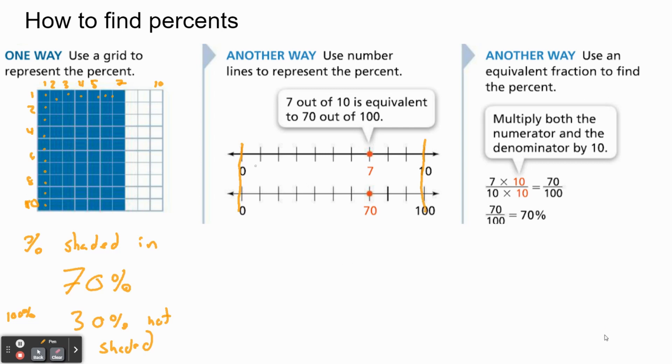That means if we keep everything equivalent, if this was 1, this is now 10. If this was 3, this is now 30. And the example that they have, 7 is now 70. Basically we just multiplied this by 10. So if we said 7 out of 10, we could say that that's actually 70%.